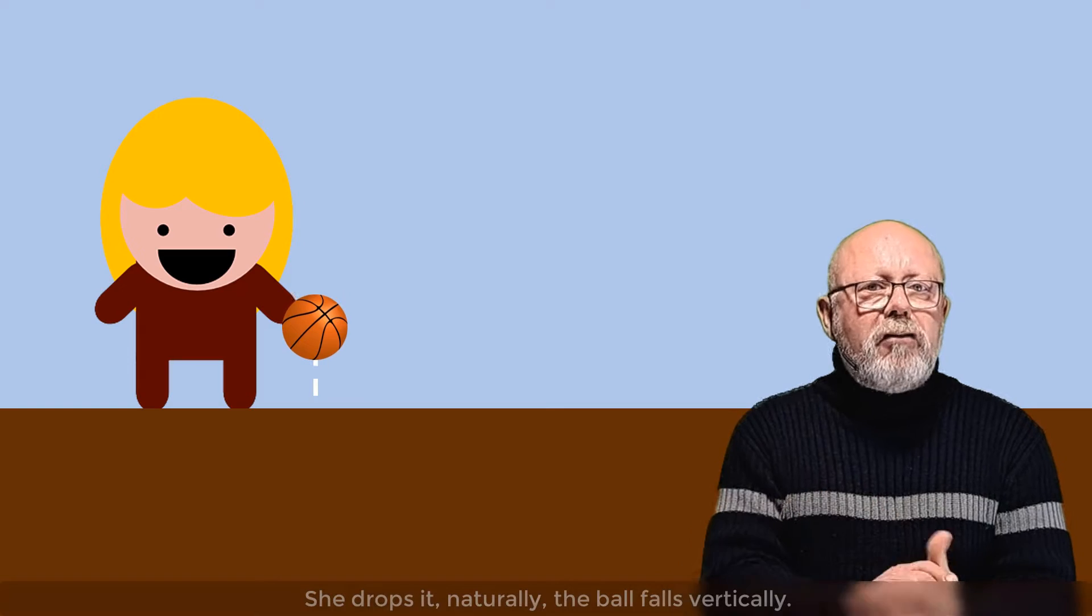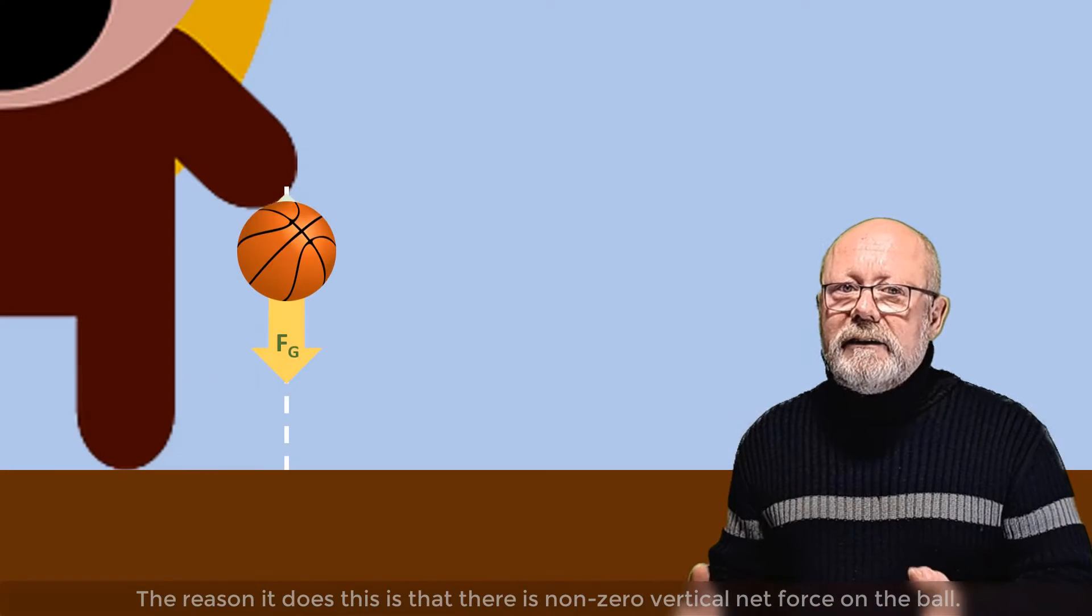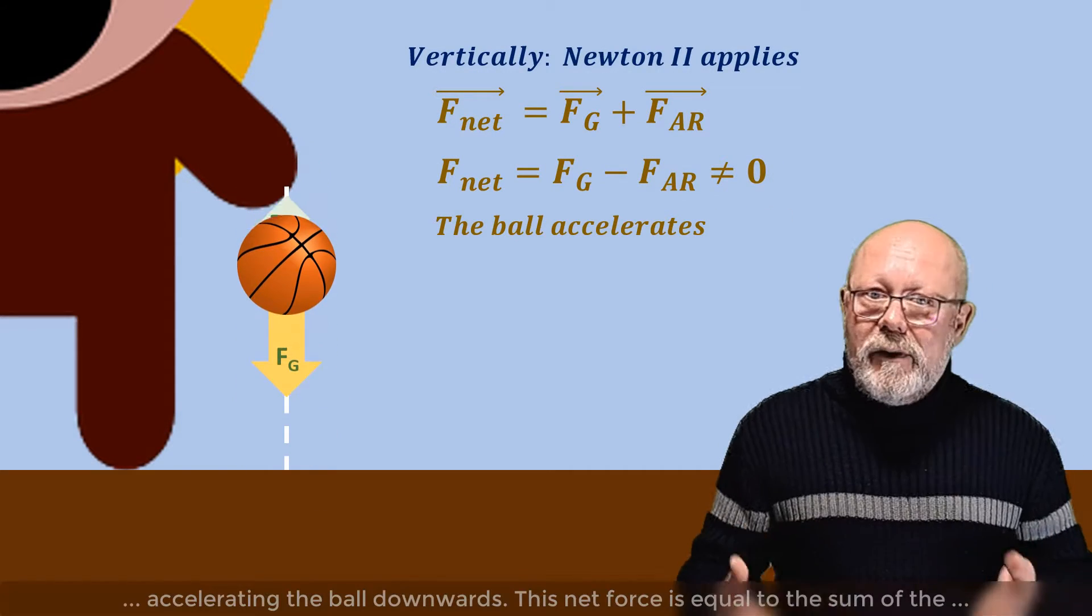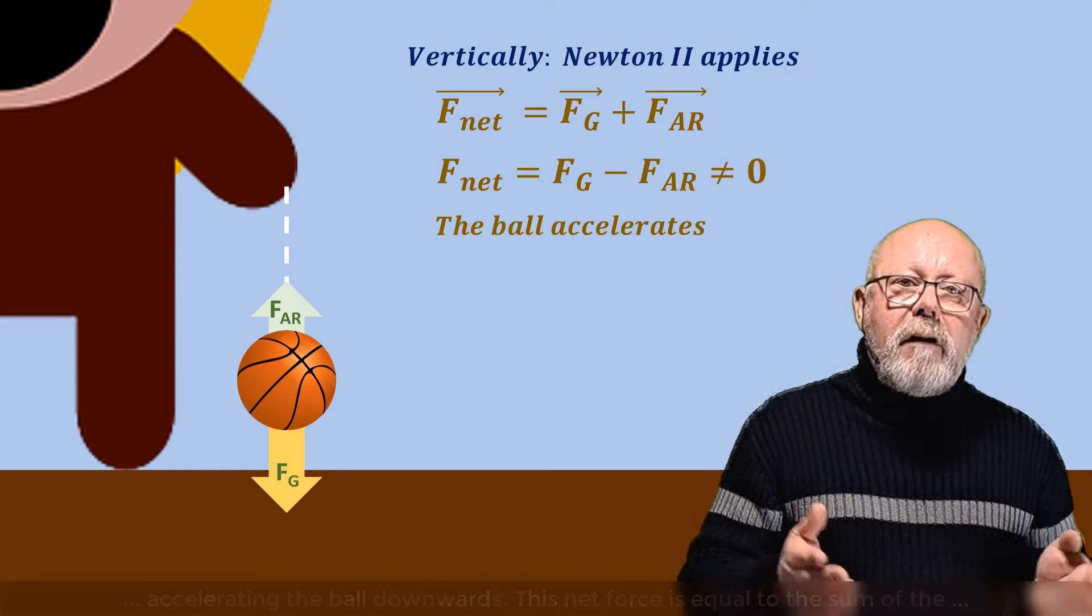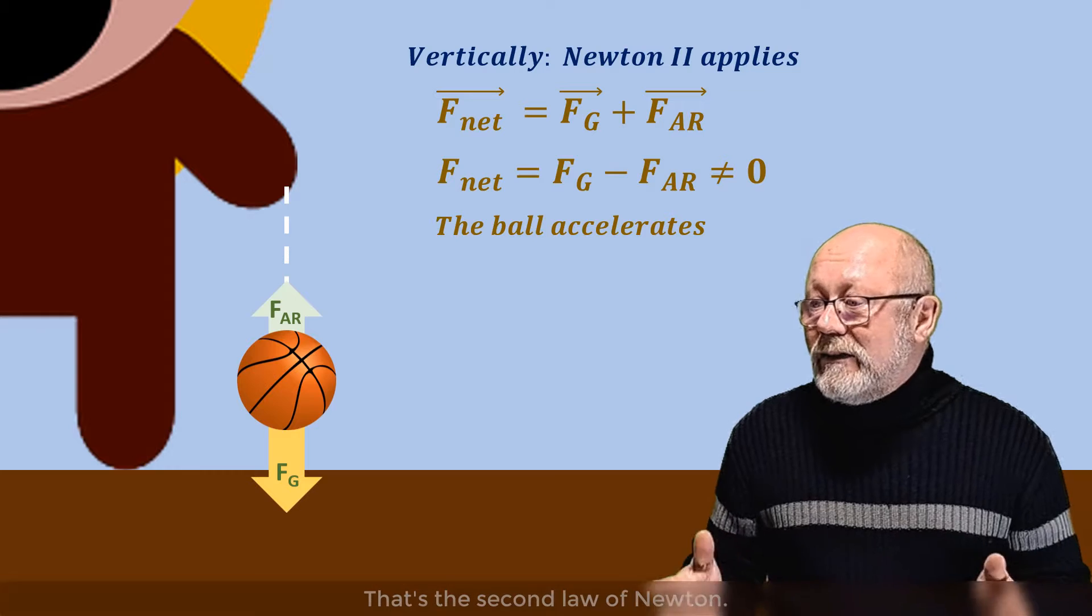To understand what this means, let's pay a visit to Alice. Alice has a ball in her hand. She drops it. Naturally, the ball falls vertically. The reason it does this is that there is a non-zero vertical net force on the ball, accelerating the ball downwards. This net force is equal to the sum of the gravitational force and air resistance force acting on the ball. That's the second law of Newton.